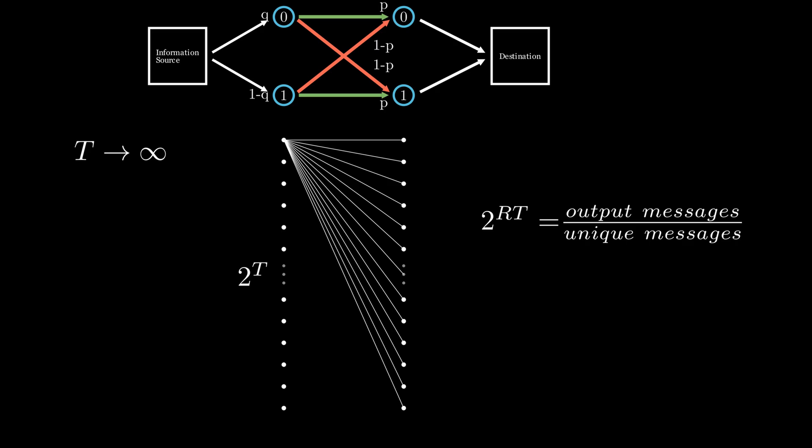With our current assumptions, the amount of output messages and the amount of unique messages will be the same as the amount of input messages. If we do the math, this essentially boils down to just the rate of 1. And it is true, if we want a completely error-free communication, we can only send one message, no matter how long our block is.